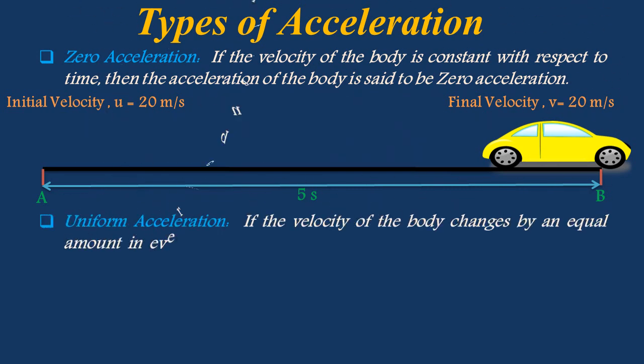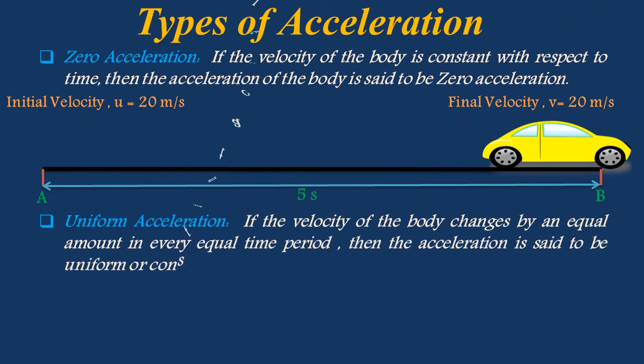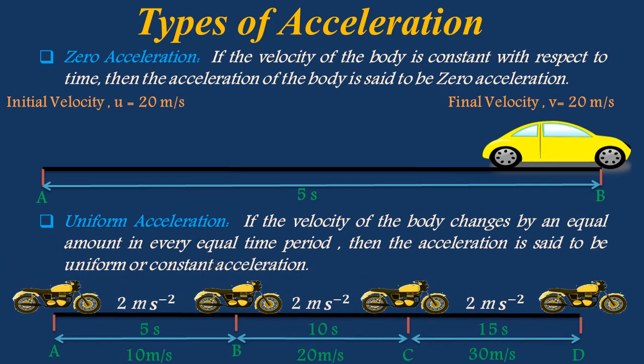If the velocity of the body changes by an equal amount in every equal time period, then the acceleration is said to be uniform or constant acceleration. For example, consider a bike at position A with velocity 10 meter per second taking 5 seconds to reach position B — acceleration is 2 meter per second square. From B with velocity 20 m/s taking 10 seconds to reach C — acceleration is 2 meter per second square. From C with velocity 30 m/s taking 15 seconds to reach D — acceleration is again 2 meter per second square. In all cases, the acceleration is uniform, that is 2 meter per second square.